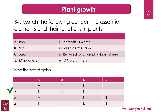Zinc is required in a large number of enzymes and plays a role in DNA transcription. A typical symptom of zinc deficiency is stunted growth of leaves, commonly known as 'little leaf,' caused by the oxidative degradation of the growth hormone auxin. Indole acetic acid (IAA) is also a hormone involved in this process.